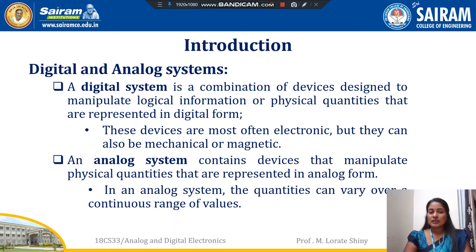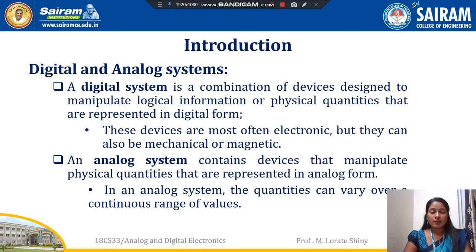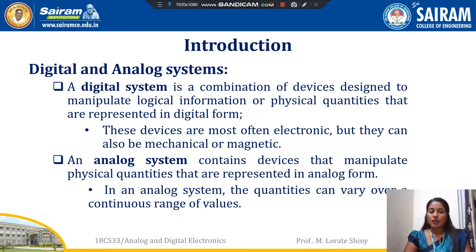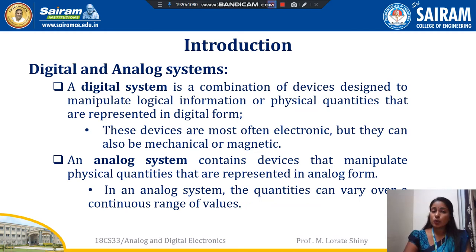Next is digital and analog systems. A digital system is a combination of devices designed to manipulate logical information or physical quantities represented in digital form, meaning the quantities take only discrete values. These devices are mostly electronic, but they can also be mechanical or magnetic. An analog system contains devices which manipulate physical quantities represented in analog form, where quantities can vary over a continuous range of values. For example, the amplitude of the output signal to the speaker in a radio output — that device can have any input from zero to its maximum limit.